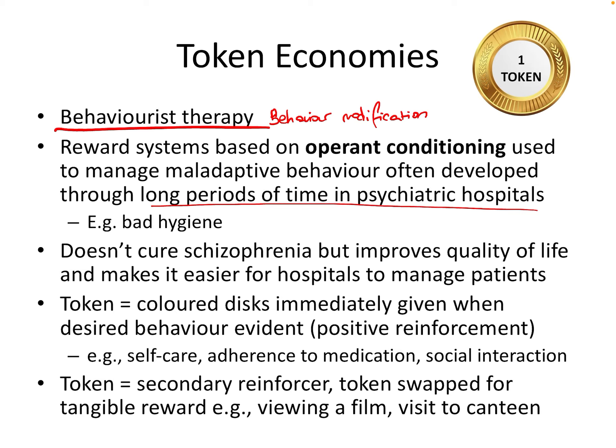Token economies are not a cure for schizophrenia and not even a therapy — they're used to improve the quality of life for patients. There are two main benefits: helping the person's life within the hospital, for example using rewards like makeup for someone who enjoys taking pride in their appearance. It also helps normalize behavior so that patients who have spent long periods in hospital are then able to adapt to normal life in the community — for example, rewarding them for getting dressed or making their beds.